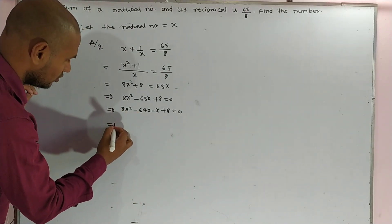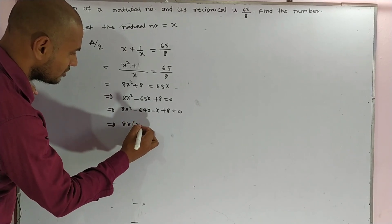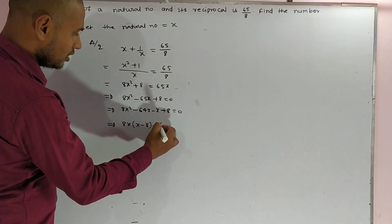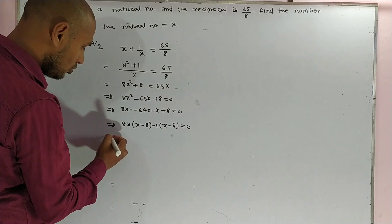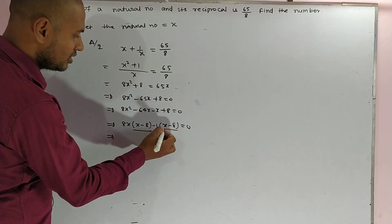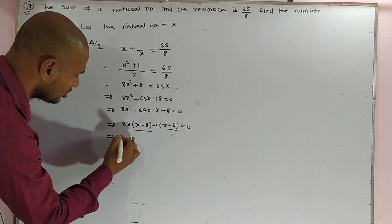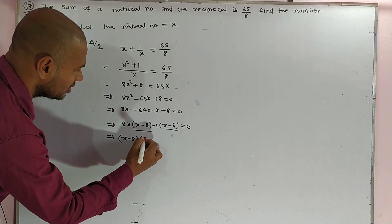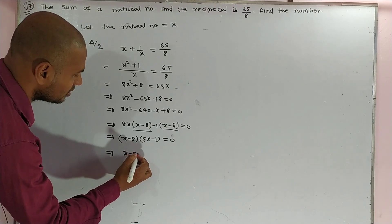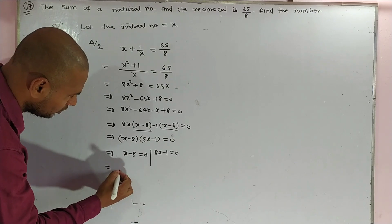This rough work we are erasing. Taking common x from the first two terms, you get x(x minus 8), and taking common minus 1 from the remaining terms, you get minus 1(x minus 8). Since x minus 8 is present in both terms, we take x minus 8 as common, giving (x minus 8)(x minus 1) equals 0.